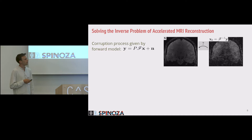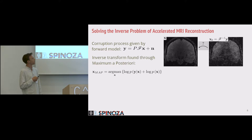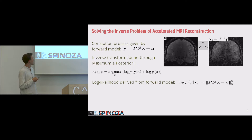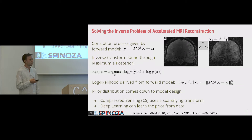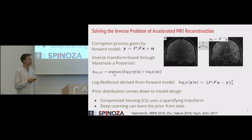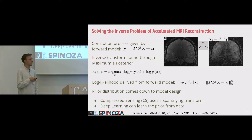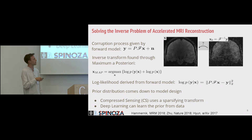Usually, this problem is solved through optimizing for the maximum a posteriori, which is the sum of the log likelihood and the log prior distribution of the image. The log likelihood distribution we know explicitly — it's given by the forward model, just the error between the acquired measurements and the reconstructed image in frequency space. However, the prior distribution is harder to pin down. In compressed sensing, a state-of-the-art non-learning-based method, they use a sparsifying transform with the L1 norm, using a transform known to compress MR images well.